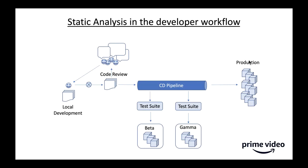What is the problem we're solving? We're trying to maintain a really high-quality bar for our software to keep end customers happy. Static analysis is great at catching bugs that are really hard to write tests for. But it's very hard to mechanize static analysis, and it's hard to get teams to fix backlogs of issues — they're really busy with big roadmaps and lots of things to deliver.